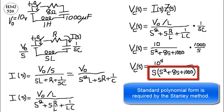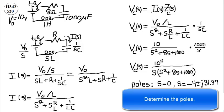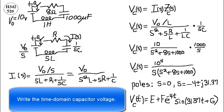Standard polynomial form is required by the Stanley method. Determine the poles. Write the time domain capacitor voltage.